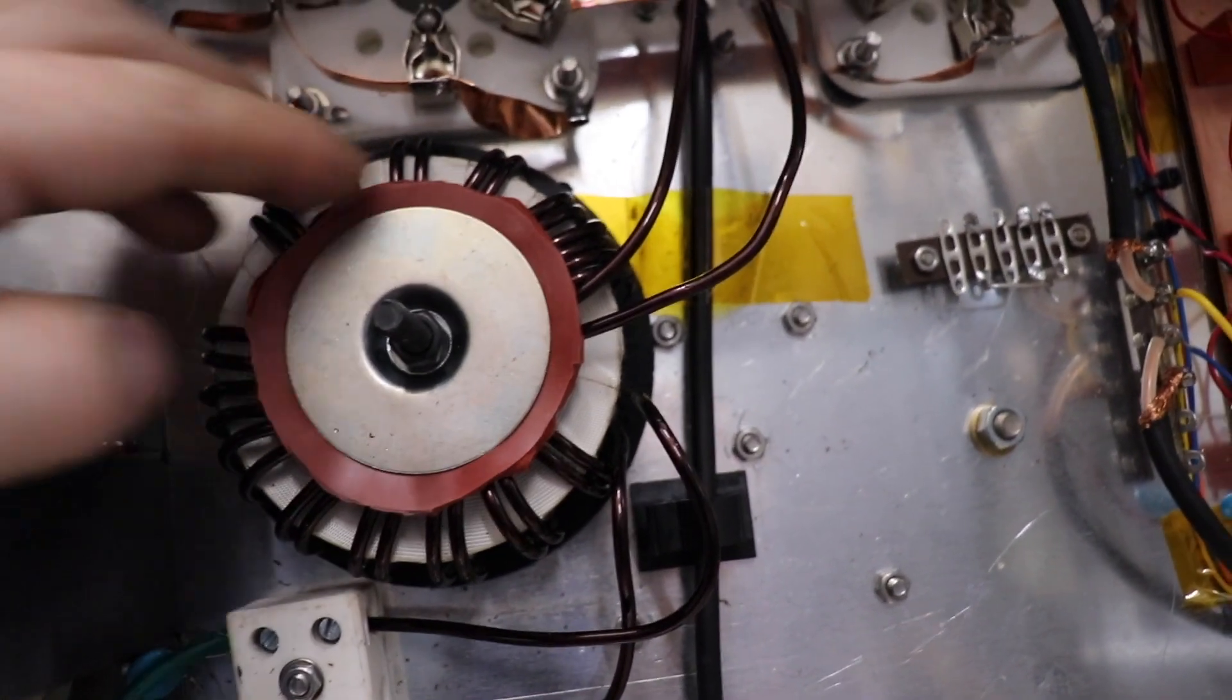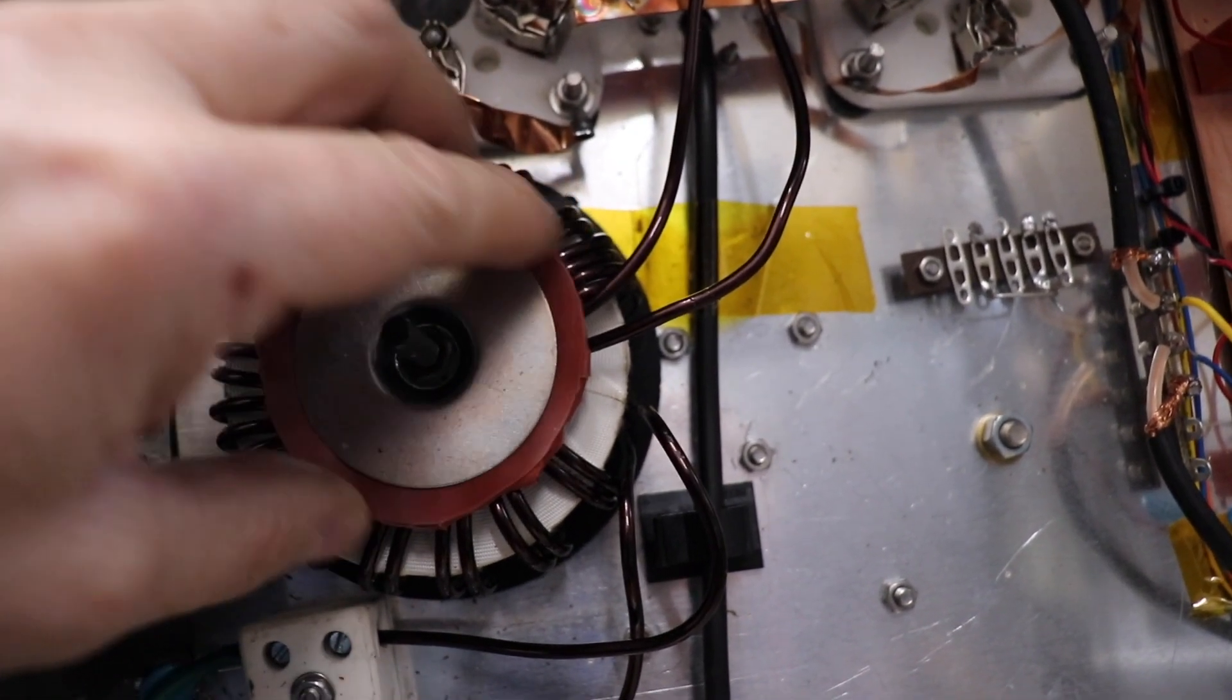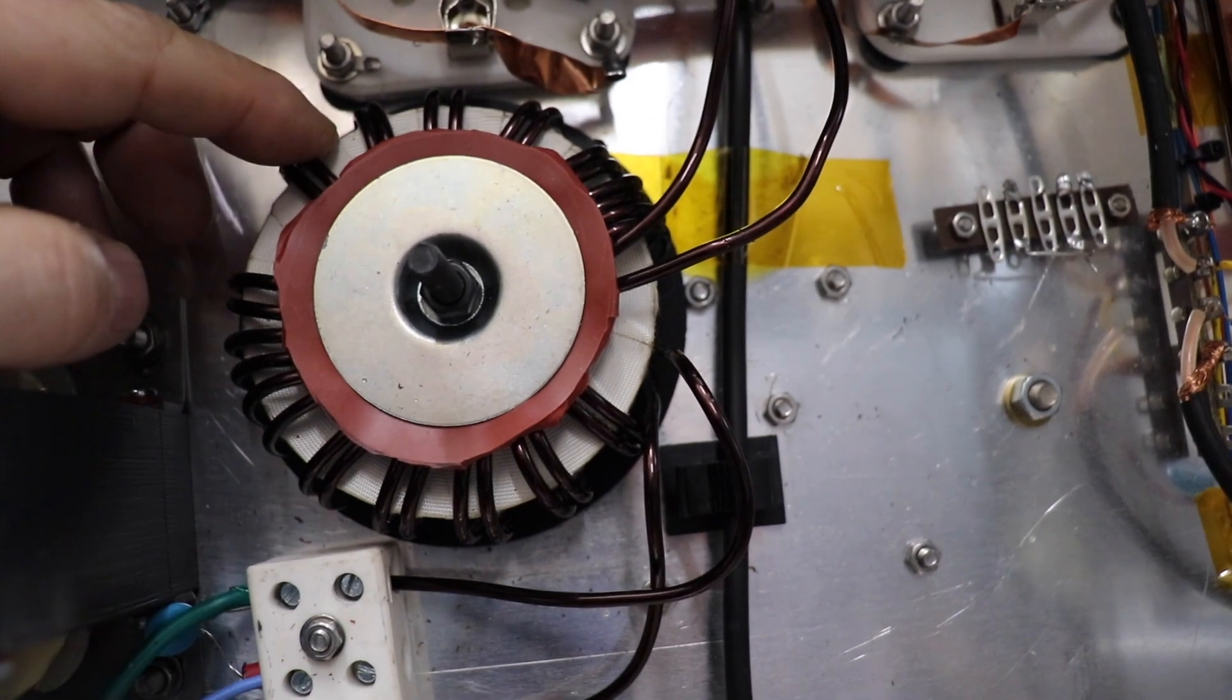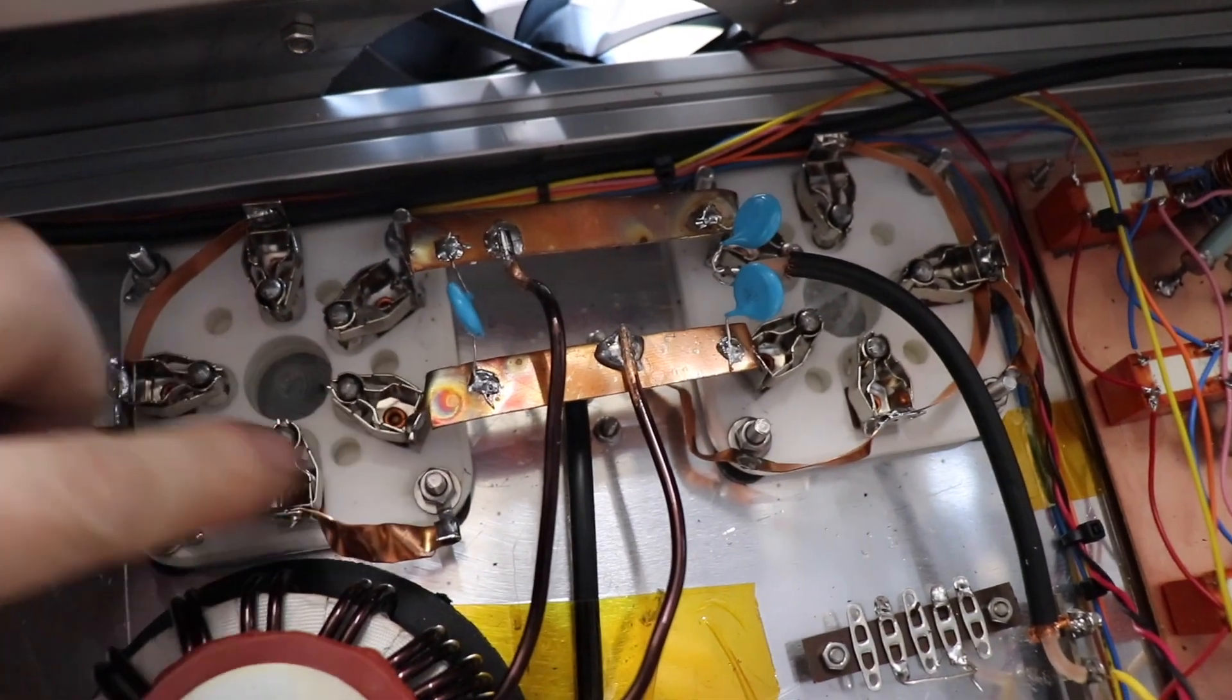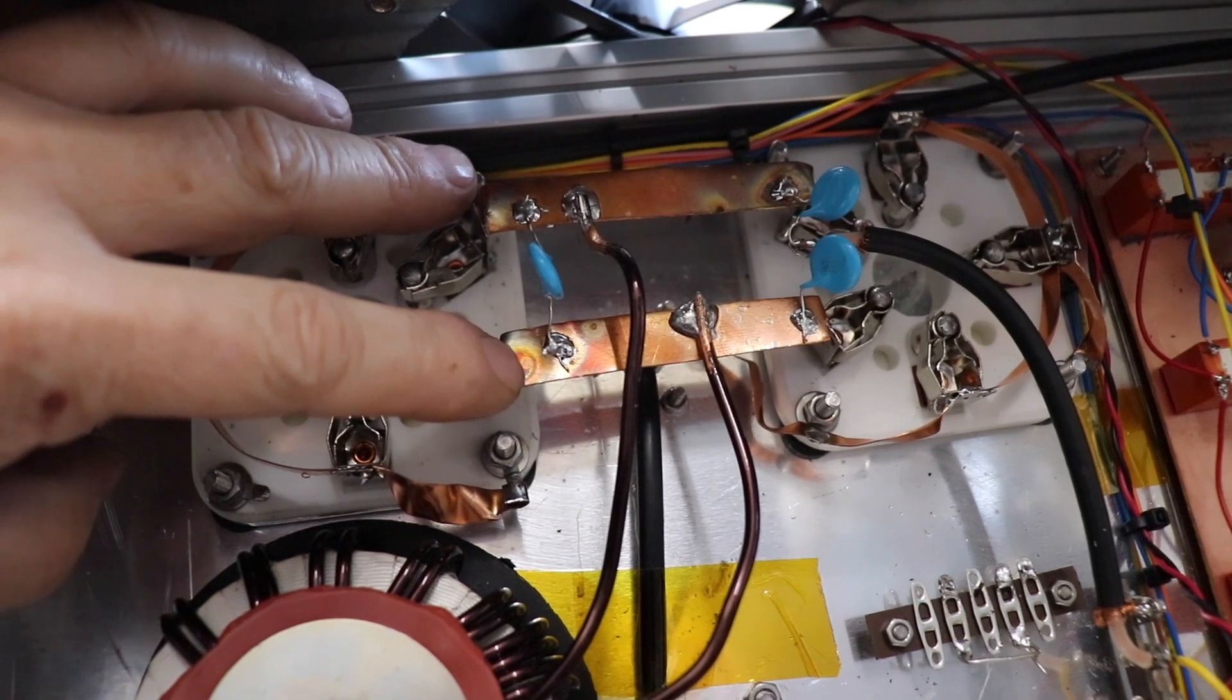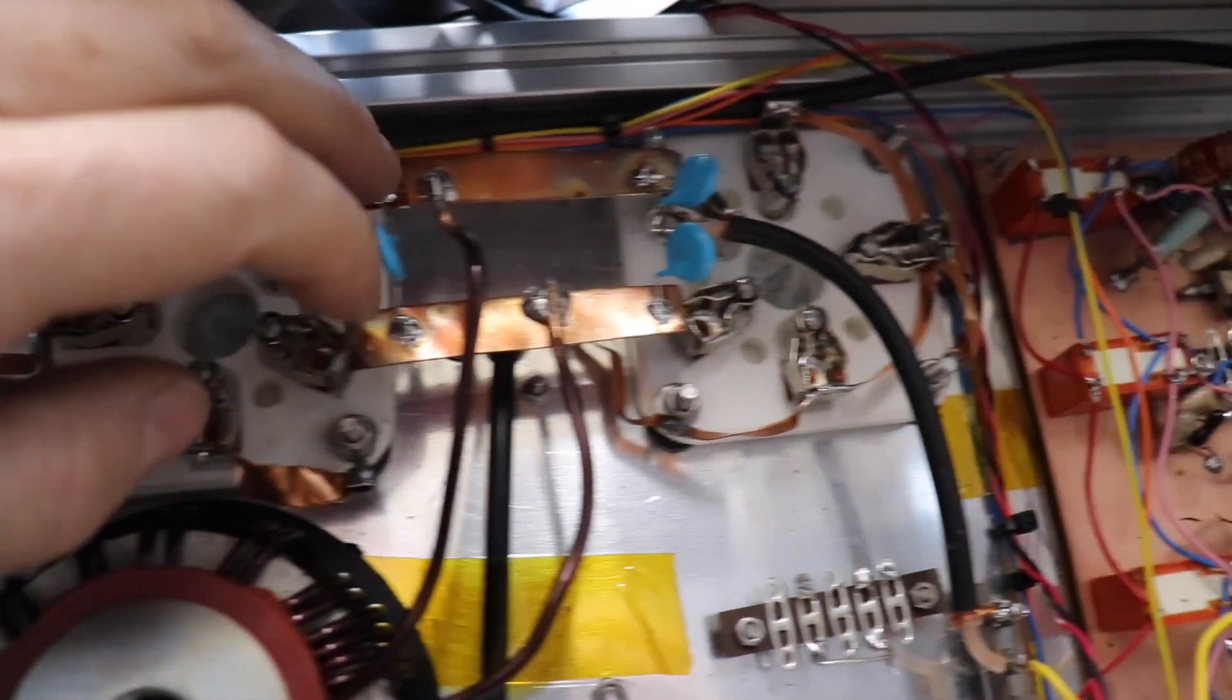This one works really well actually, I'm quite pleased with this. I've got about 22 microhenries on this, which for 160 meters which this covers, it works out quite well. So we've got those two copper bars there for the filaments, and we've got the capacitors there for the input.